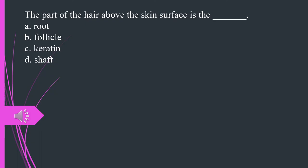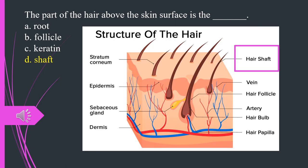The part of the hair above the skin surface is what? A. Root. B. Follicle. C. Keratin. D. Shaft. The answer is D. Shaft.